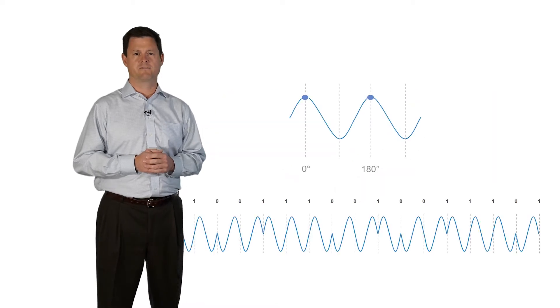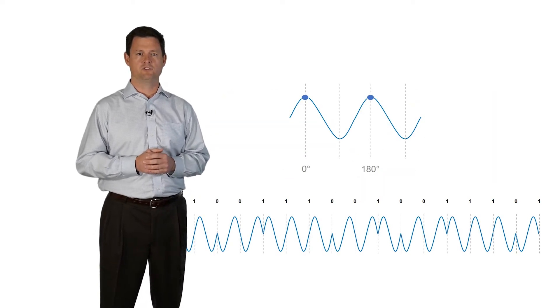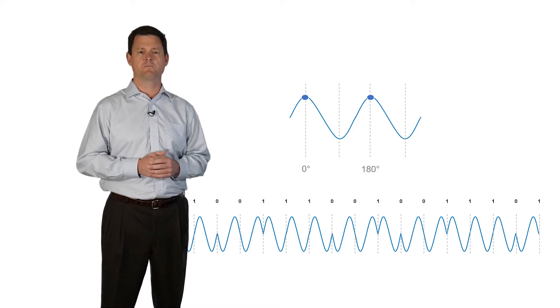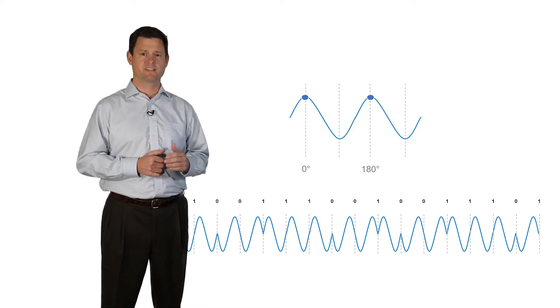Because we can detect the phase of the wavelength, we can now use a transmission method called phase shift keying, also known as PSK. Instead of detecting the power, you're detecting the phase of the wavelength.